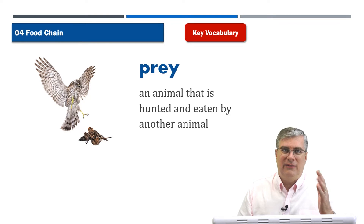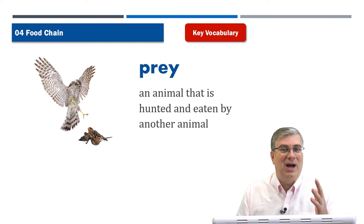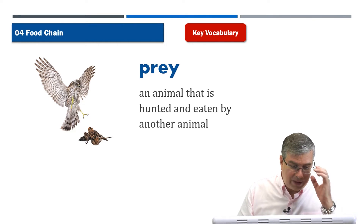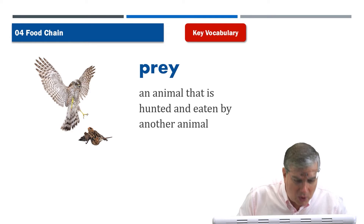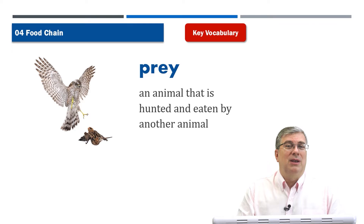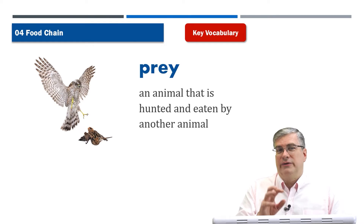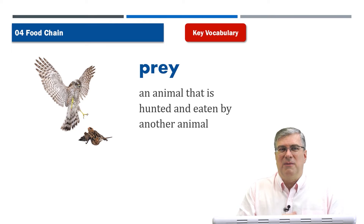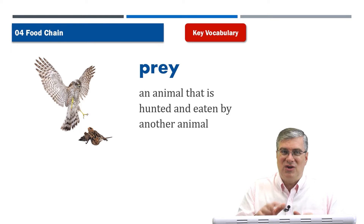Owls are fierce and very smart — they're very good hunters. Here it looks like the owl is eating another bird, but owls are also very famous for eating mice. Many people like having owls around because the owls feed on mice and rats that would otherwise get into a farmer's crops or food in the barn. So owls help keep the population of mice and rats under control.